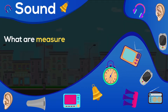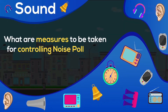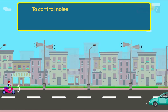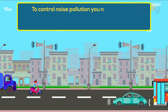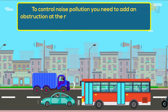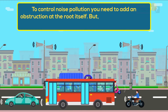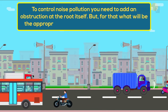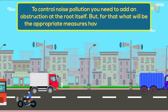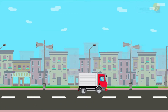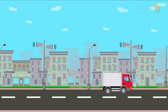What are the measures to be taken for controlling noise pollution? To control noise pollution, you need to add an obstruction at the root itself. But for that, what will be the appropriate measures? Have a look at the same.